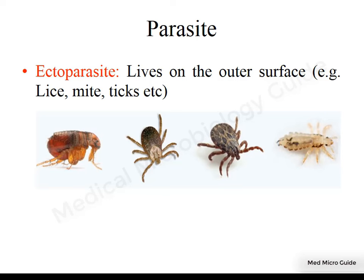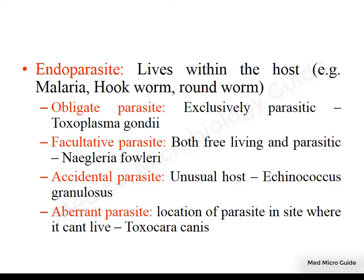The parasites can be divided into two types. The one which lives on the surface of the body is called an ectoparasite — like lice, mite, tick, fleas and so on. An endoparasite is one which lives within the host. Example: hookworm and roundworm, which live in the intestine.